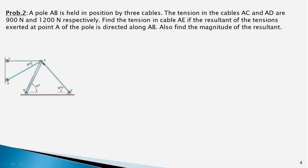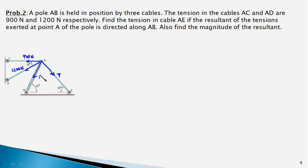So we draw the forces acting on point A of the pole. One force is 900 Newtons. We are also given the tension force at point A due to cable AD, which is 1200 Newtons. The tension in cable AE is unknown; let us call it T. The resultant of these three forces is along the line AB, and we need to find both T and the magnitude of R. The first step is to set up a coordinate system, and we normally fix the x-axis horizontally and y-axis vertically.